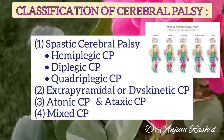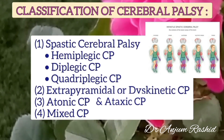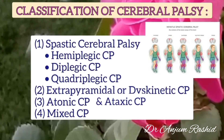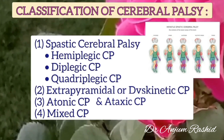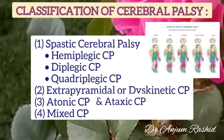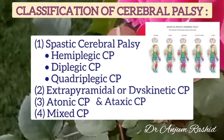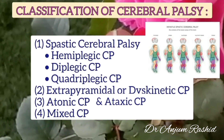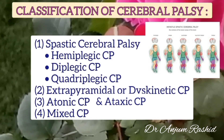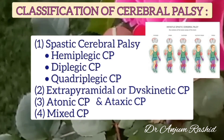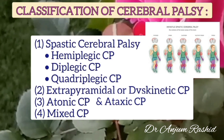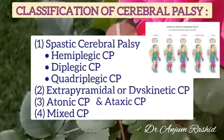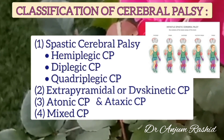The classification of cerebral palsy includes: first, spastic cerebral palsy — hemiplegic, diplegic, or quadriplegic; second, extrapyramidal or dyskinetic, also known as athetoid or choreoathetoid cerebral palsy; third, atonic and ataxic cerebral palsy; and fourth, mixed cerebral palsy.